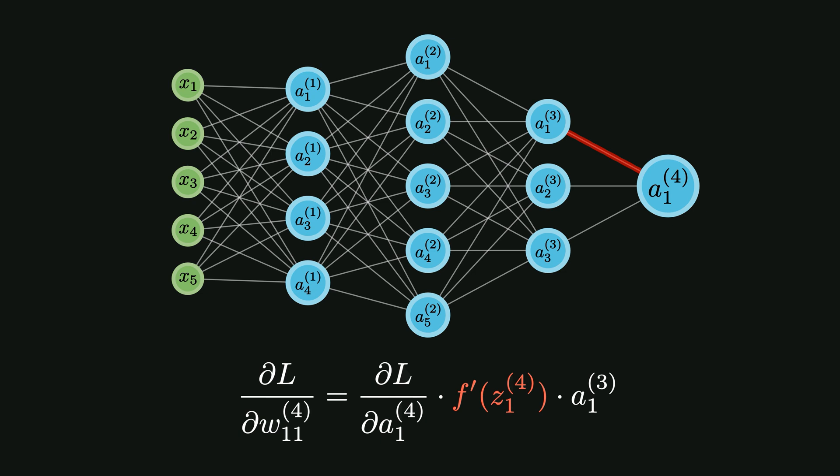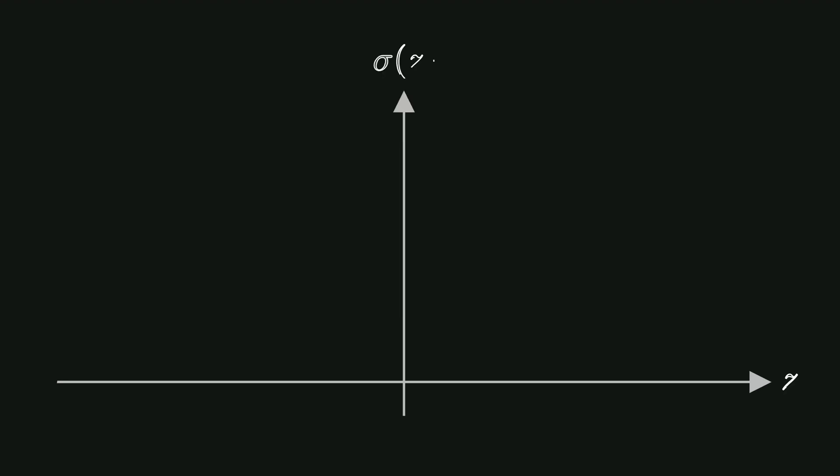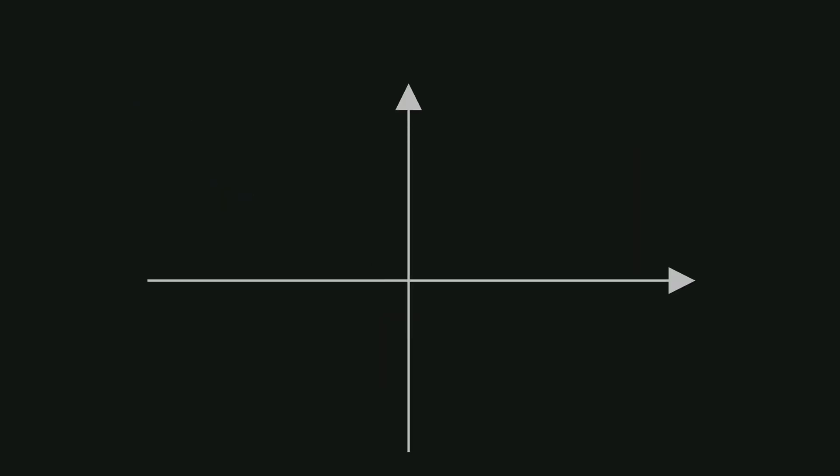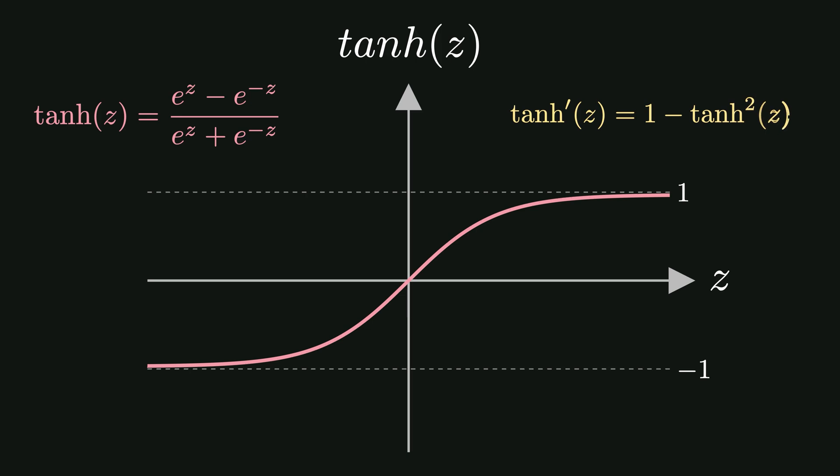Let me give some examples of activation functions that can potentially cause these problems. Let's start with sigmoid. The sigmoid function looks like this with a range from 0 to 1. Its derivative looks like this and its maximum value can only be 0.25. A similar situation occurs with tanh where the function itself ranges from minus 1 to plus 1 while its derivative ranges from 0 to 1.